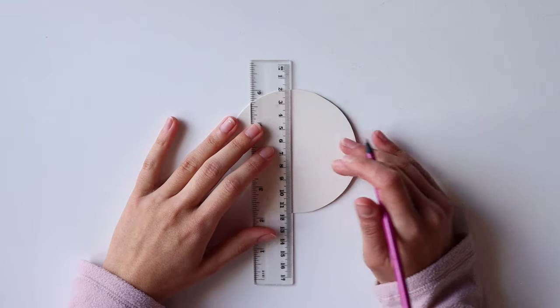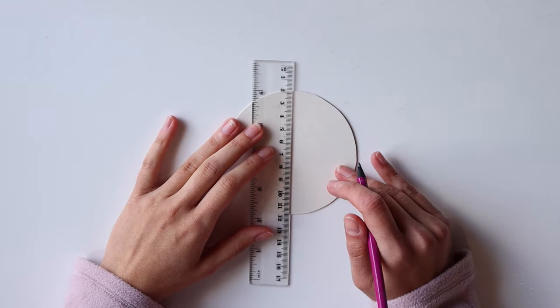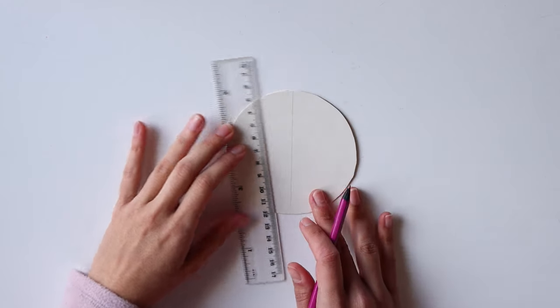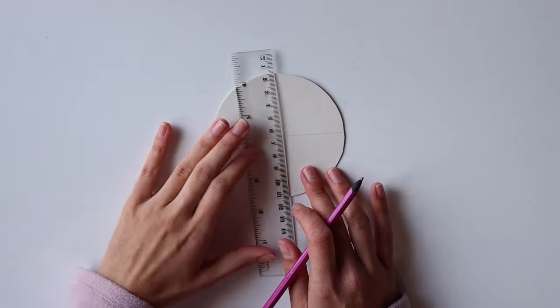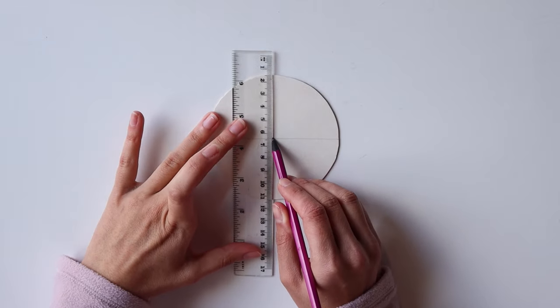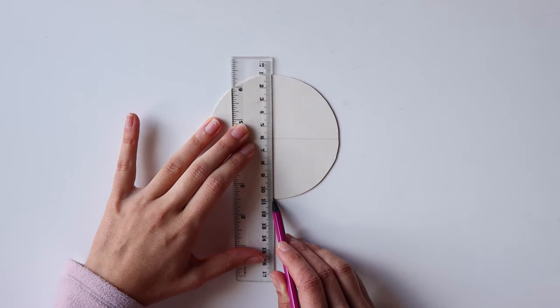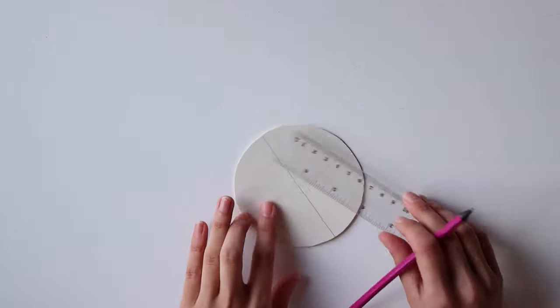Now let's mark the holes. Grab a ruler and make a line running through the center. Another perpendicular to that. Then just keep dividing these sections until you have the needed amount of markings.